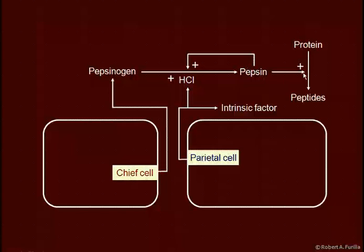Pepsin, because it is a protease, breaks protein down into peptides. The reason for high acidity in the stomach is to help denature these proteins. Proteins bound in their tertiary structure resist enzymatic degradation. If we can unfold the proteins and open up binding sites so that pepsin can cleave them into smaller peptides and even amino acids, we begin the process of protein digestion, which will continue in the intestines.